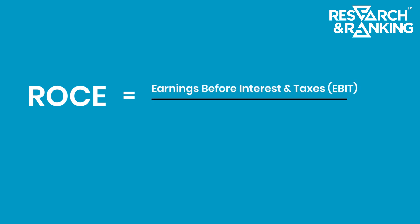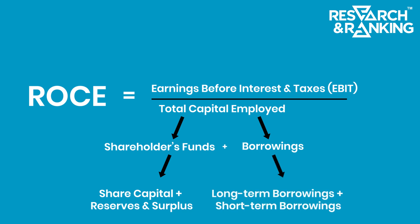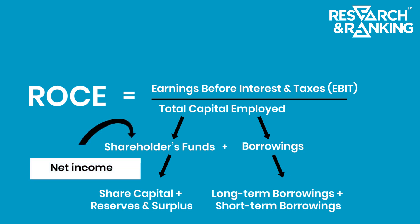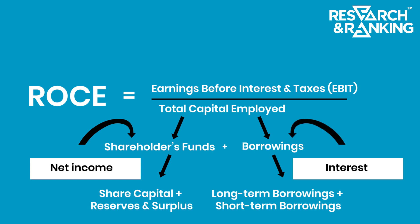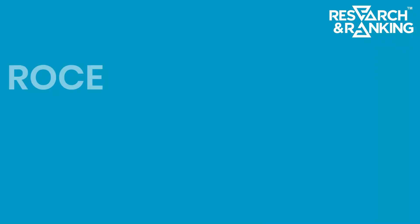ROCE is calculated as EBIT (Earnings Before Interest and Taxes) divided by Capital Employed. Capital Employed is the sum of shareholders' funds plus borrowings. Shareholders' funds consist of share capital plus reserves and surplus, while borrowings include both long-term and short-term borrowings. EBIT includes both net income and the interest payment component, which is why we take EBIT in the numerator — it accounts for returns to both equity shareholders and lenders.